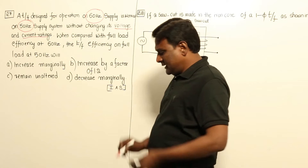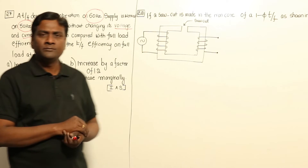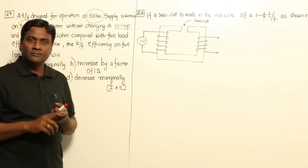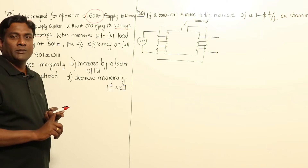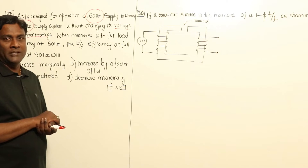Basically, in a transformer, there are three types of losses: hysteresis loss, eddy current losses, and copper losses.